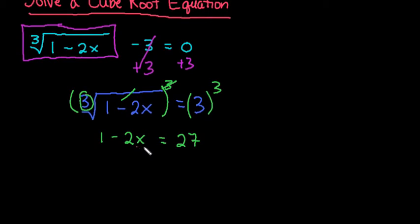Then we solve for x by solving this linear equation. Subtract 1 from both sides to get negative 2x equals 26. We end up with x equals negative 13 after dividing both sides by negative 2.